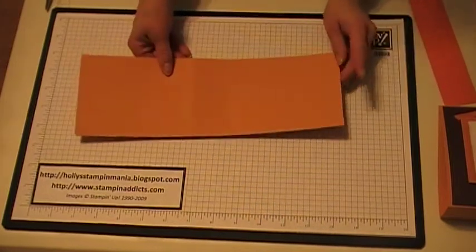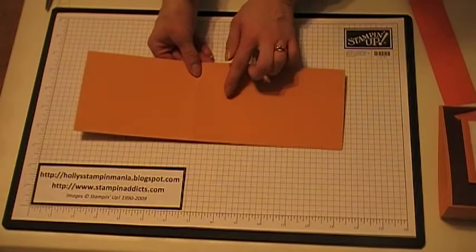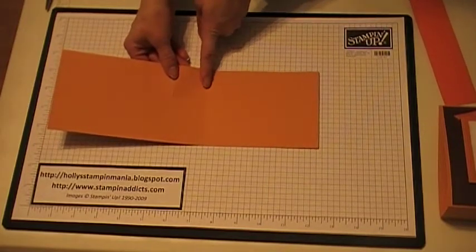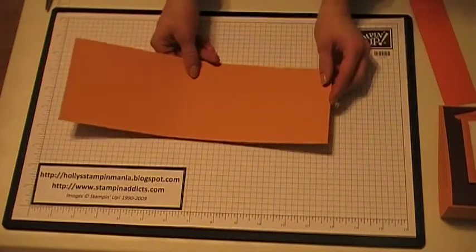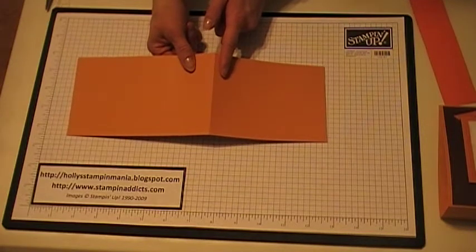I already scored these but I'm going to go over the scoring measurements. You want to score from this end to here at five and a quarter. Then you want to flip it around and score again from here to the scored line at five and a quarter again.